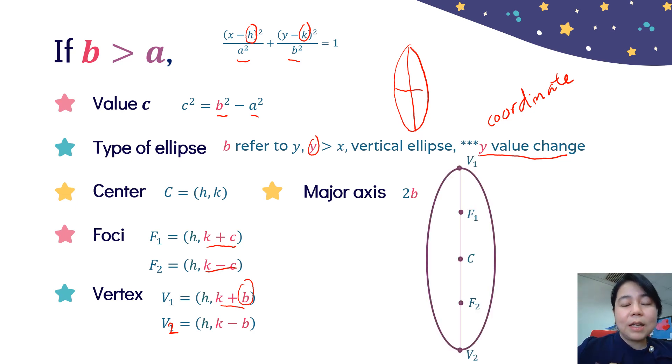This is the ellipse that we get, vertical ellipse. Label all the important points: the center, F₁, F₂, V₁, V₂.